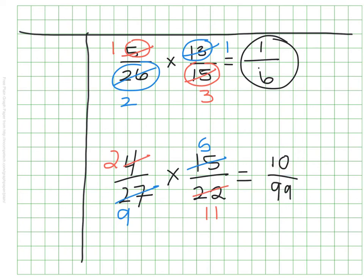You can see I simplified my 4 and 22 before I multiplied and I simplified my 15 and 27 before I multiplied. Which meant in the end the answer I got 10/99ths was already in its simplest form.